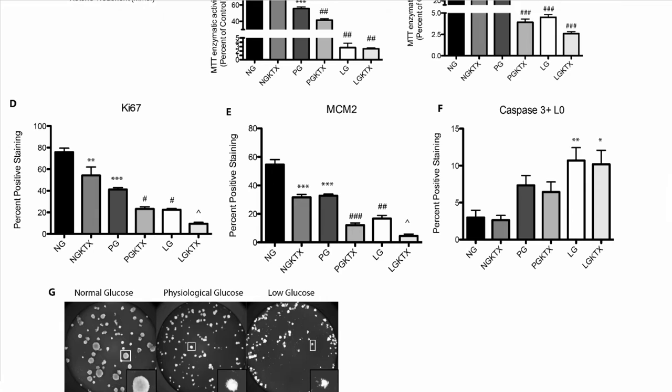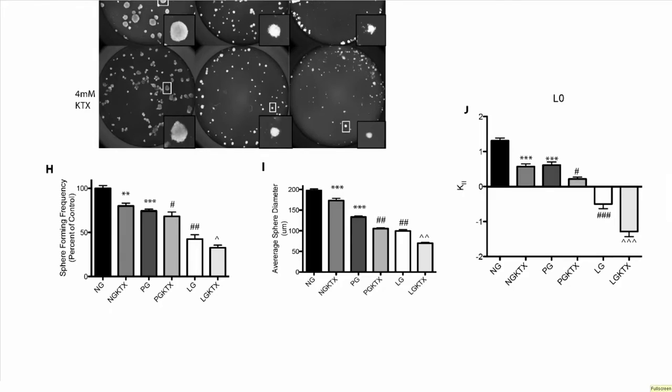She looked at Ki-67 again — are cells proliferating less? Yes, cells are proliferating less. Surprisingly, adding ketones did not increase cell death; reducing glucose increased cell death, but adding ketones did not. What ketones did do was reduce the number of cells actually dividing. And when she looked at the sphere-forming clonogenic assay, the number of clones was reduced by adding ketones, the average size of clones was further reduced, and there was a further reduction in the symmetric division rate of the cancer stem cell population.